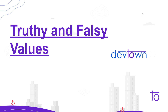Hello guys, welcome back to Dev Town. In this video we are going to see what are truthy and falsy values — sometimes pronounced as 'falsy' or F-A-L-S-E-Y. Whenever you learn JavaScript, you should understand that every value in JavaScript is a truthy value, unless there are some exceptions. We are going to see those exceptions and some examples of both truthy and falsy values.